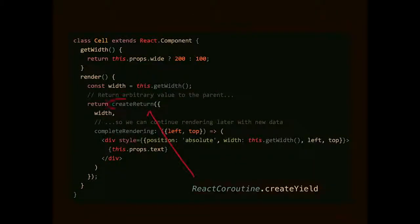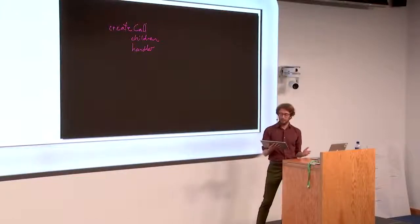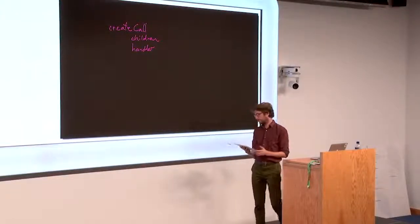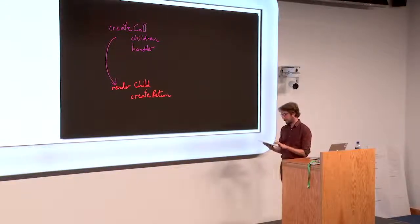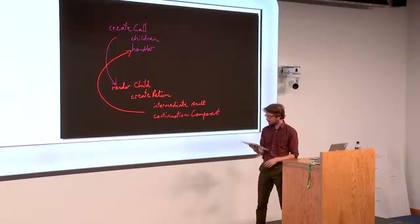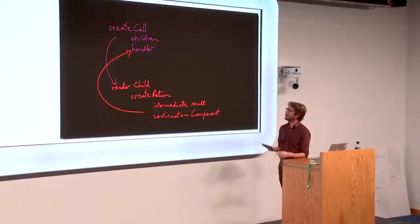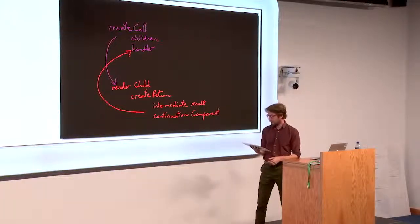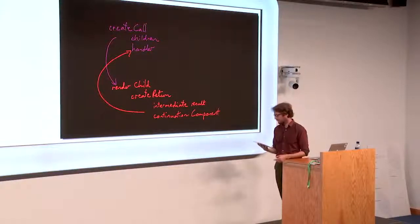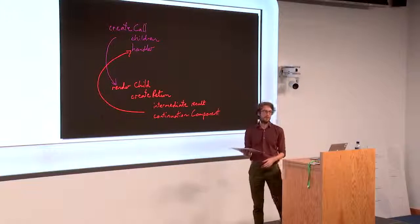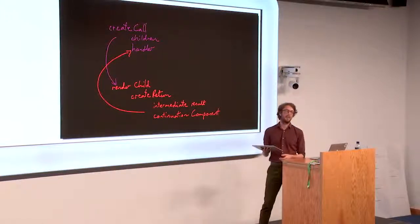It used to be called ReactCoroutine.CreateCoroutine.CreateYield. And it was renamed. It's a little complicated to see what's going on here, so I've just simplified it. What happens is that with create call, you pause the parent and you mark that fiber as unfinished, but you move on to processing the children. You then do something in the children to get an intermediate result. You then resume the parent in the handler with that intermediate result. And you also pass in a continuation component. And you render that continuation component with whatever extra data you have based on that intermediate result.